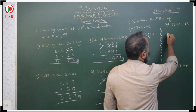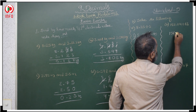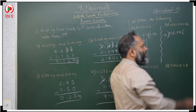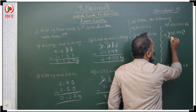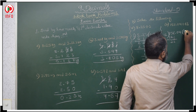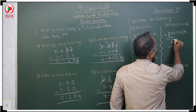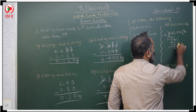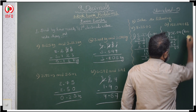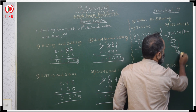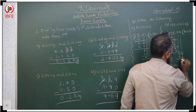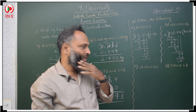Next: 152.04 divided by 12. In the 12 table, 12 ones are 12; 15 minus 12 is 3, bring down 2. 12 twos are 24; 32 minus 24 is 8. Bring decimal point and 0. 12 sixes are 72; bring down 4. 12 sevens are 84; 84 minus 84 is 0. The answer is 12.67.